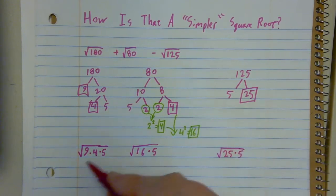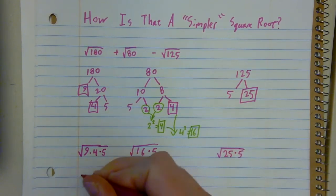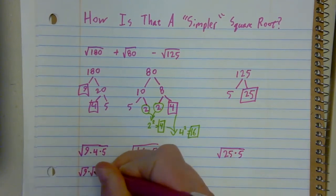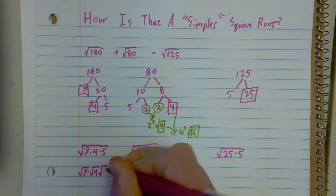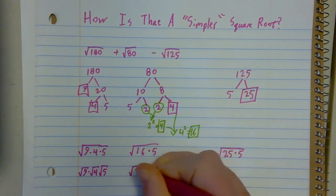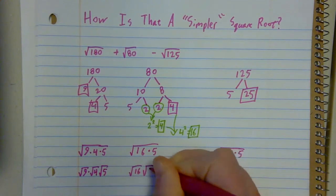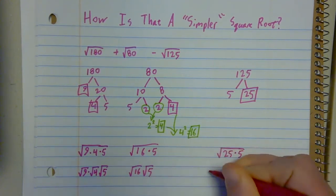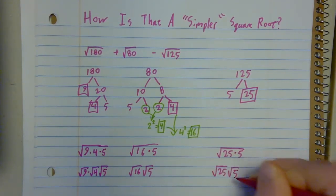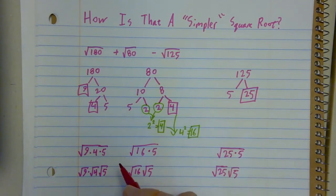So then this I can rewrite as square root 9 times square root 4 times square root 5. This one I can rewrite as square root 16 times square root 5. This one I can rewrite as square root 25 times square root 5. And then out come my perfect squares.